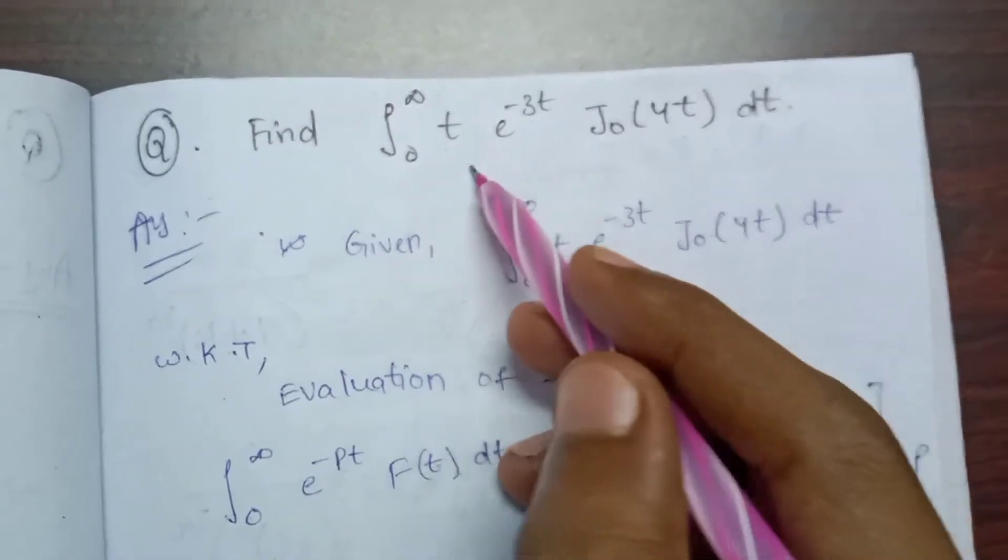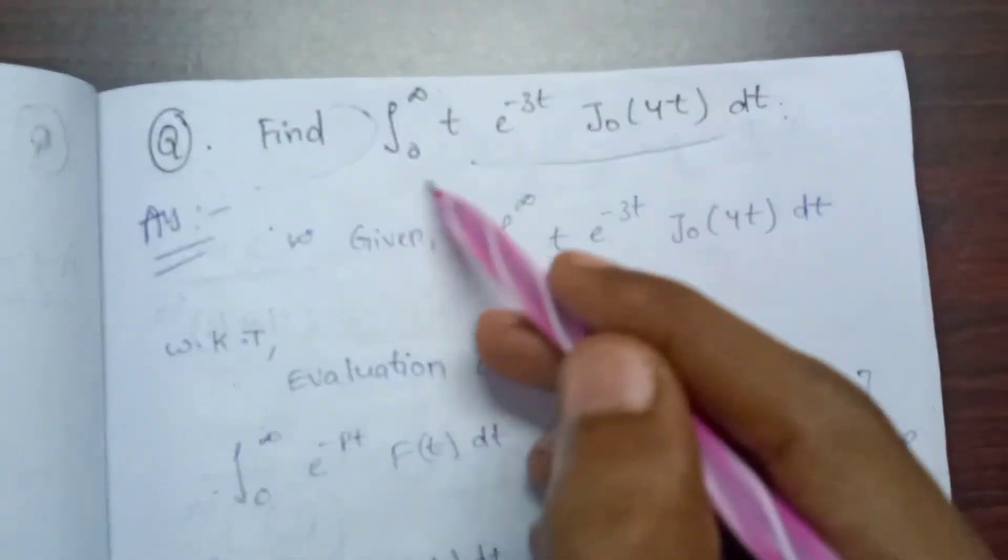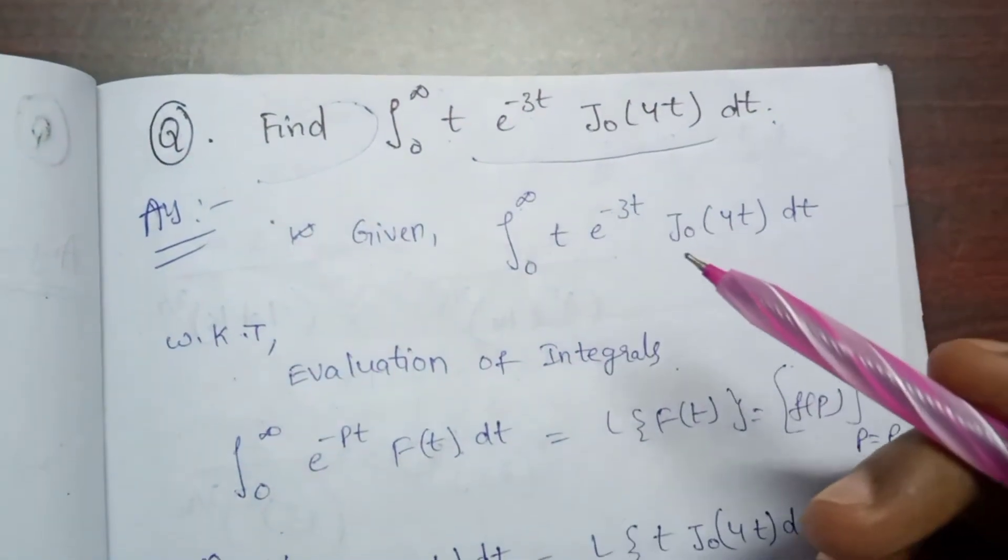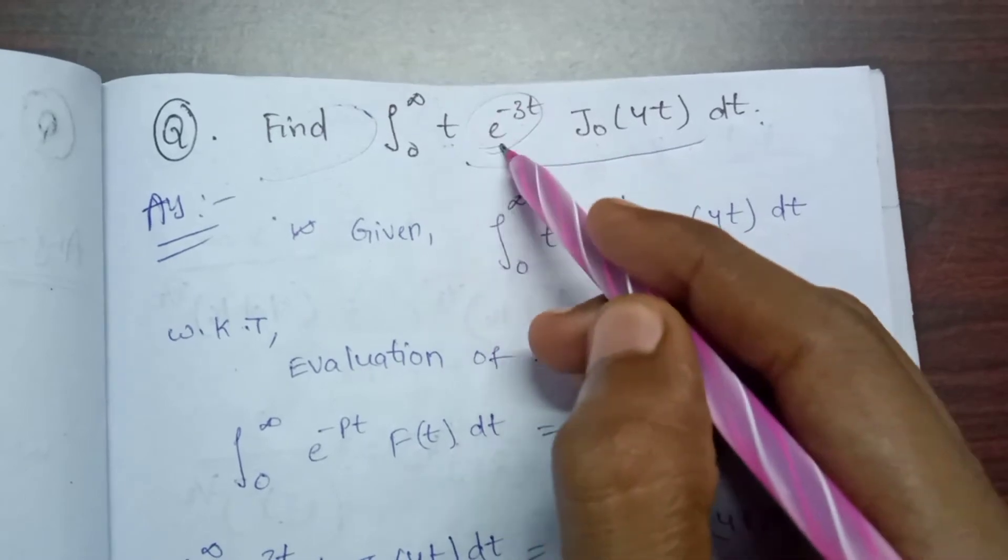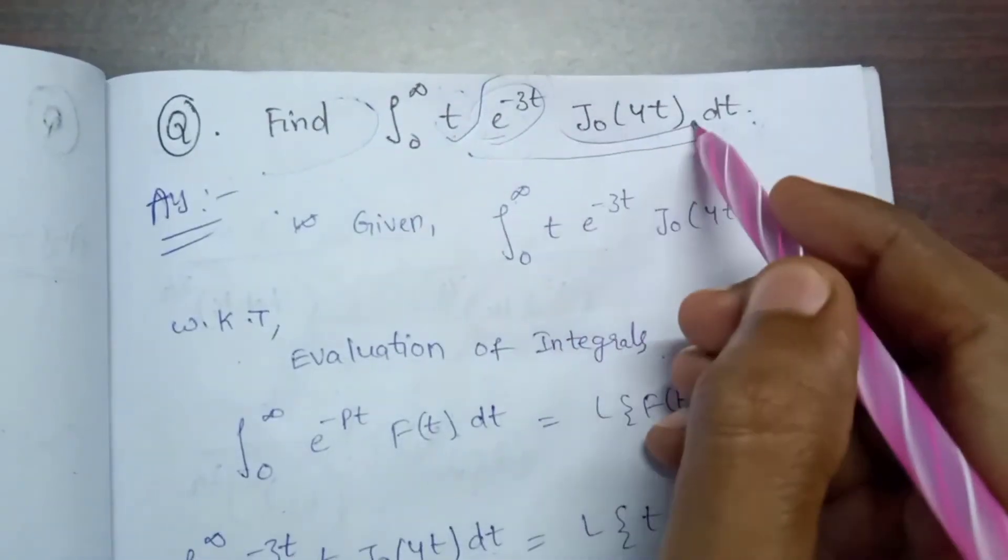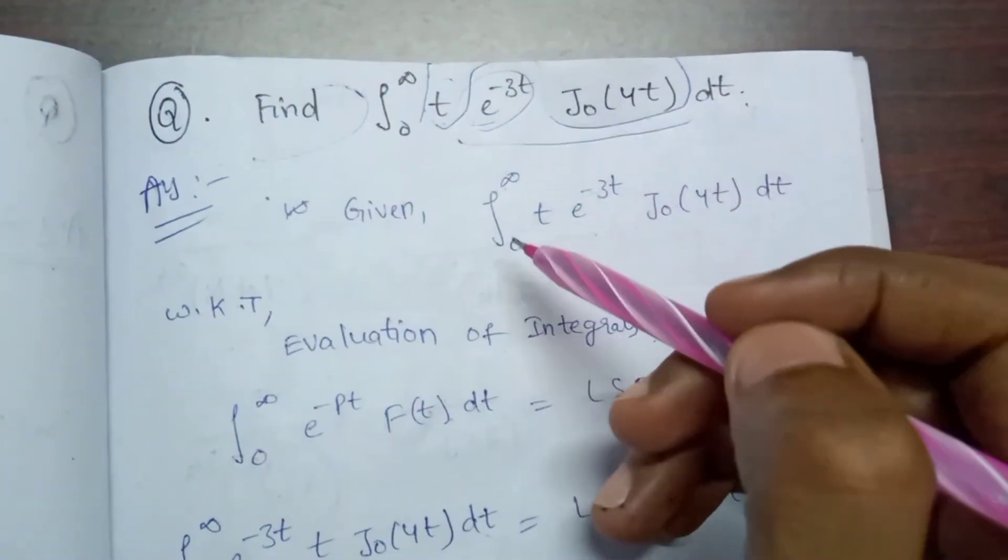If you want to find the integral from 0 to infinity of e^(-3t) J0(4t) dt, we use the formula for integrals of the form: integral from 0 to infinity of e^(-bt) f(t) dt. Let's do it.